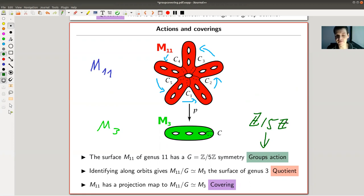So this was my space from before, the red one. I call it M11 because it has 11 holes. So it's a surface of genus 11. And the green one down here is M3. Same notation. It has three holes. So it's a surface of genus 3. And clearly, the upstairs space has this funny 5-fold symmetry given by rotation.